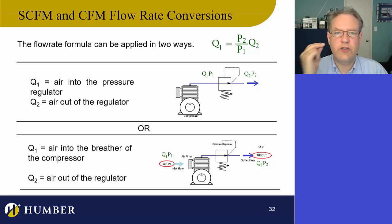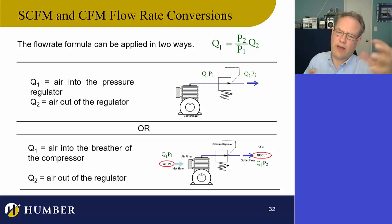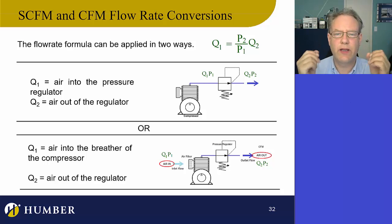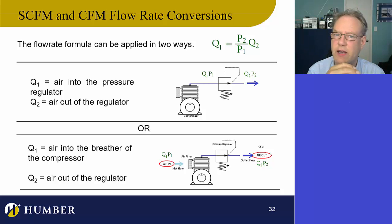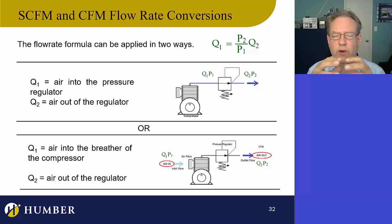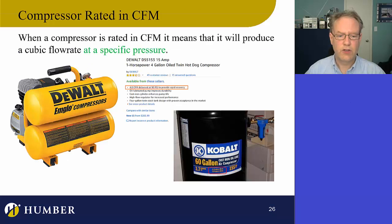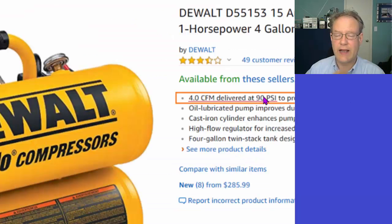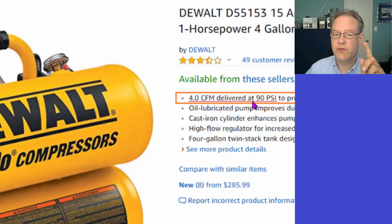Let's go through the PowerPoint and see some examples with the math in action — how we choose the right compressor, what flow rates are about, and how pressure affects flow rate. We're going to study flow rates from two different ways. Compressors are rated at a particular flow rate. If we run this at 90 PSI, it gives 4 CFM. If I crank it down to 70, that 4 CFM would go up.